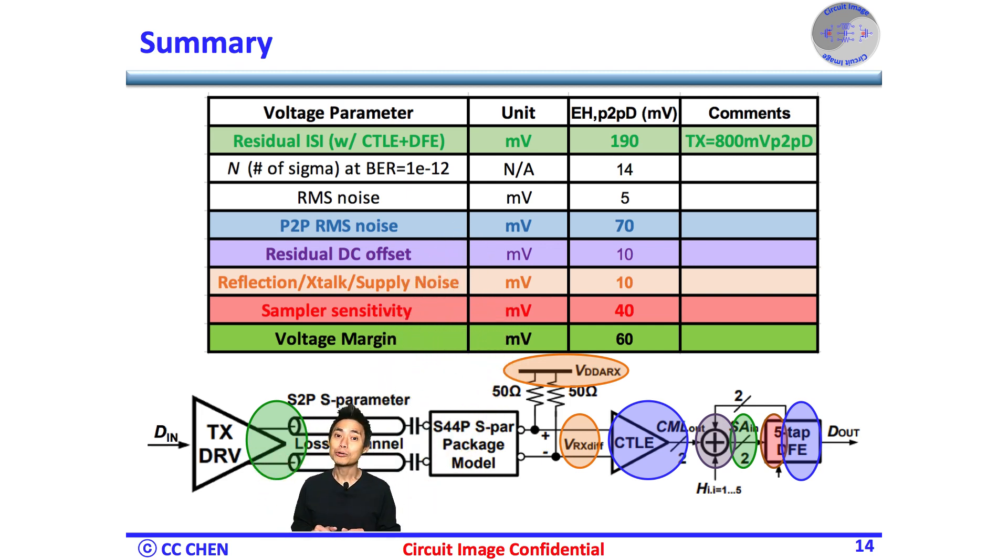Okay, let's start with the TX output swing, 800 mV peak-to-peak differential, and 22 dB loss on the Nyquist rate. Then, we have the CTLE and DFE to equalize the ISI over PVT. Then, a worst case residual ISI shows 190 mV peak-to-peak differential inner eye height as a starting point.